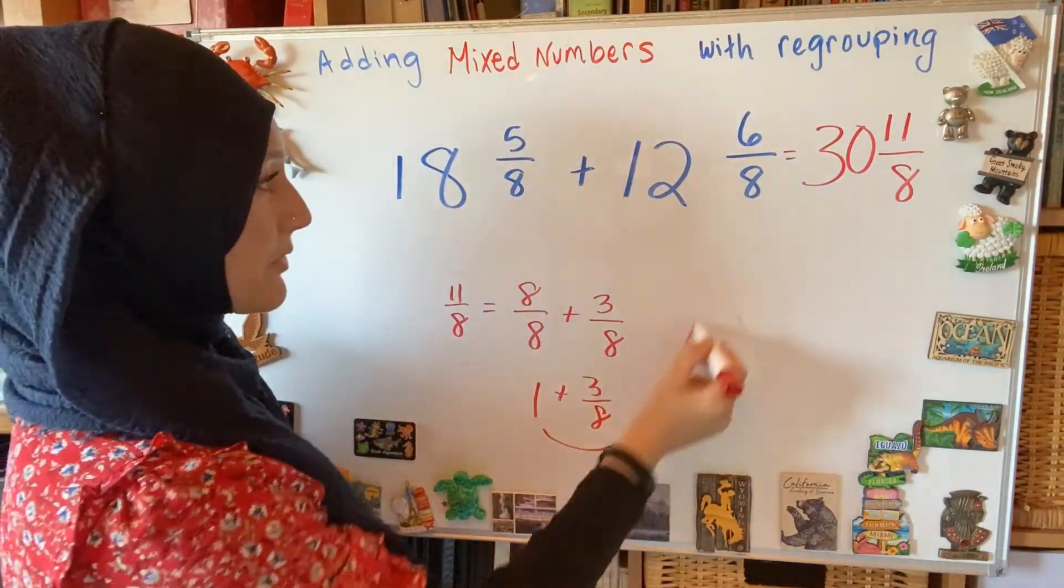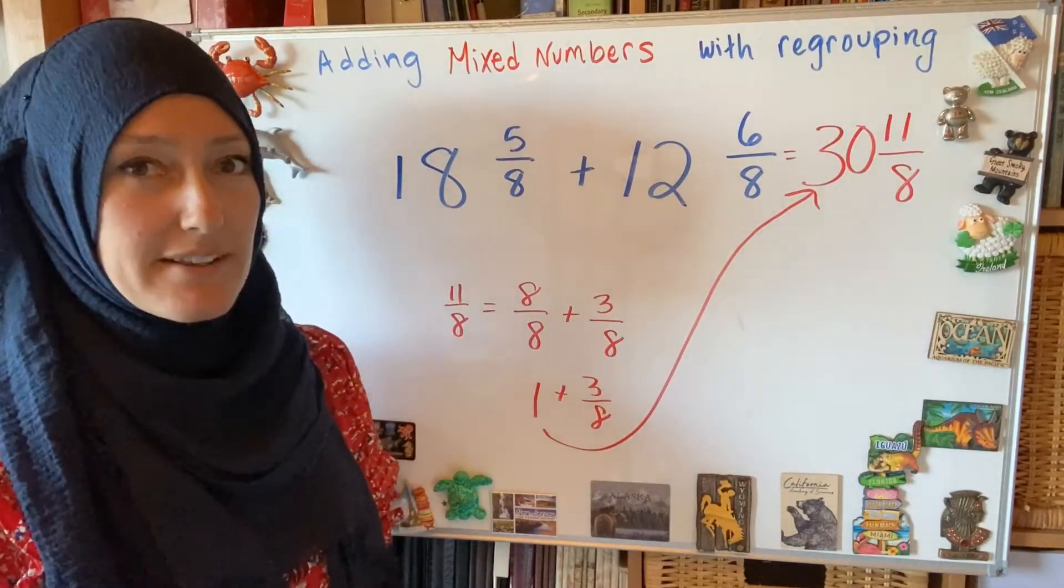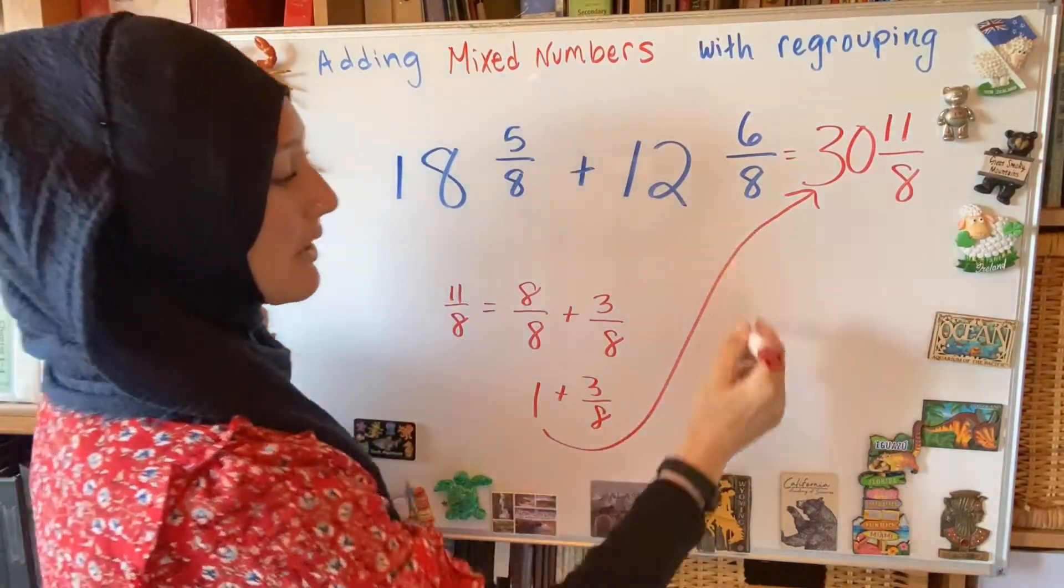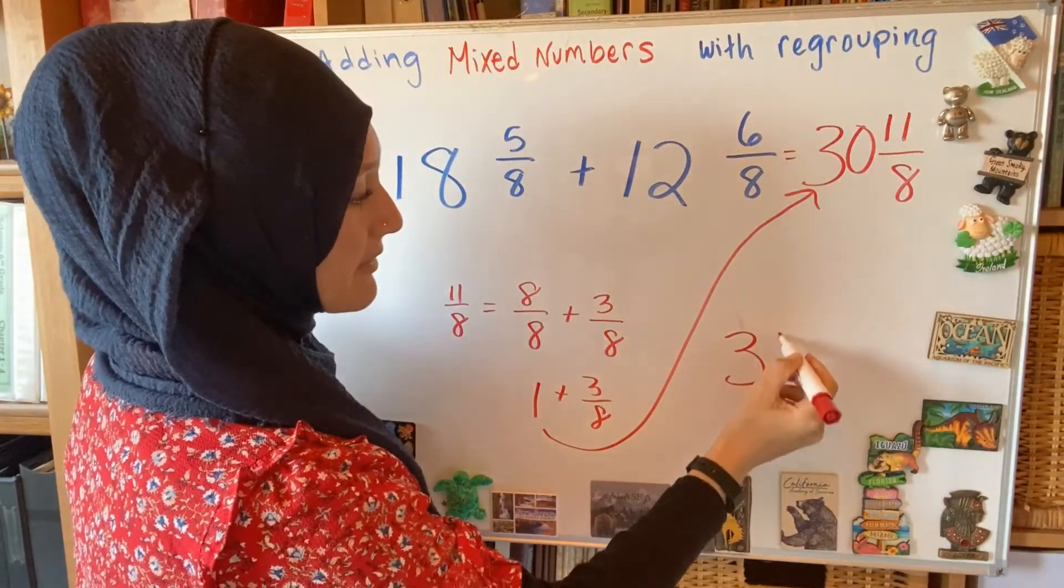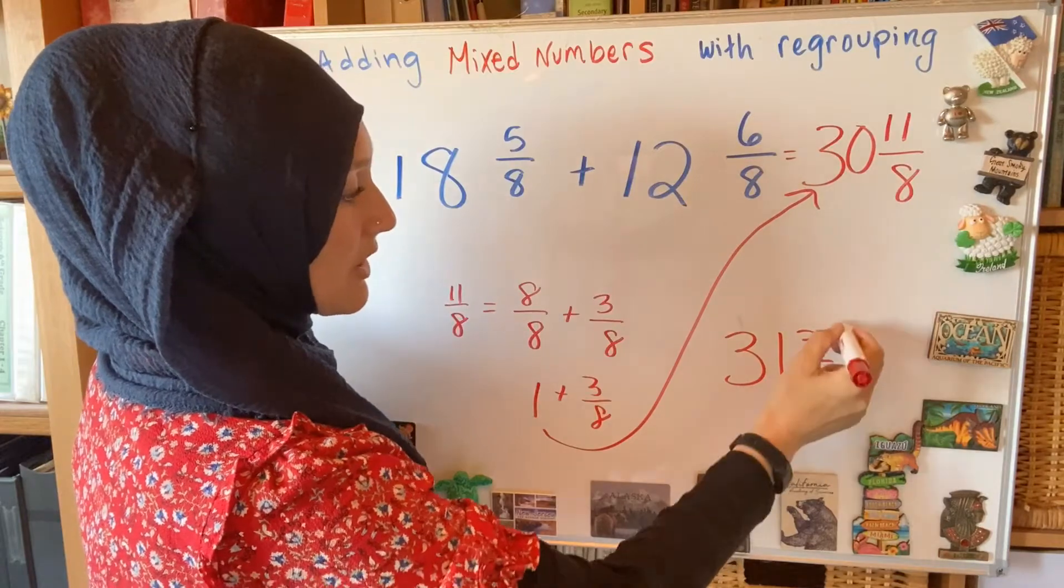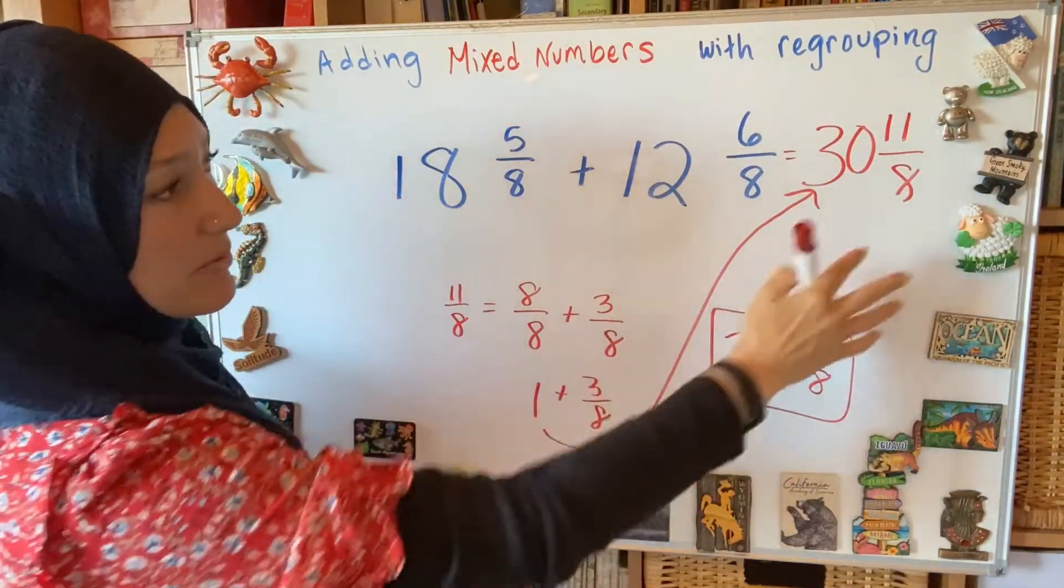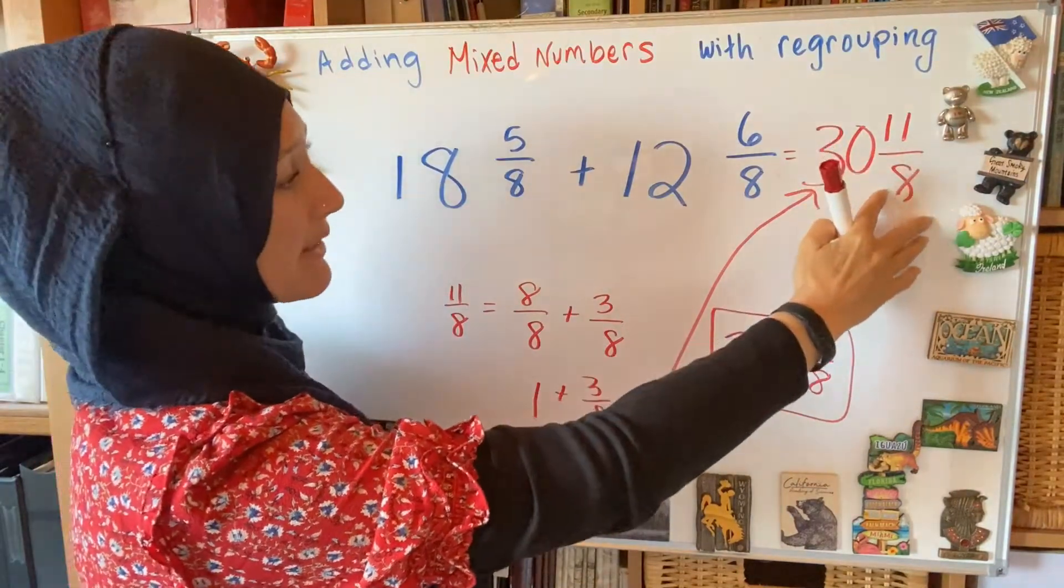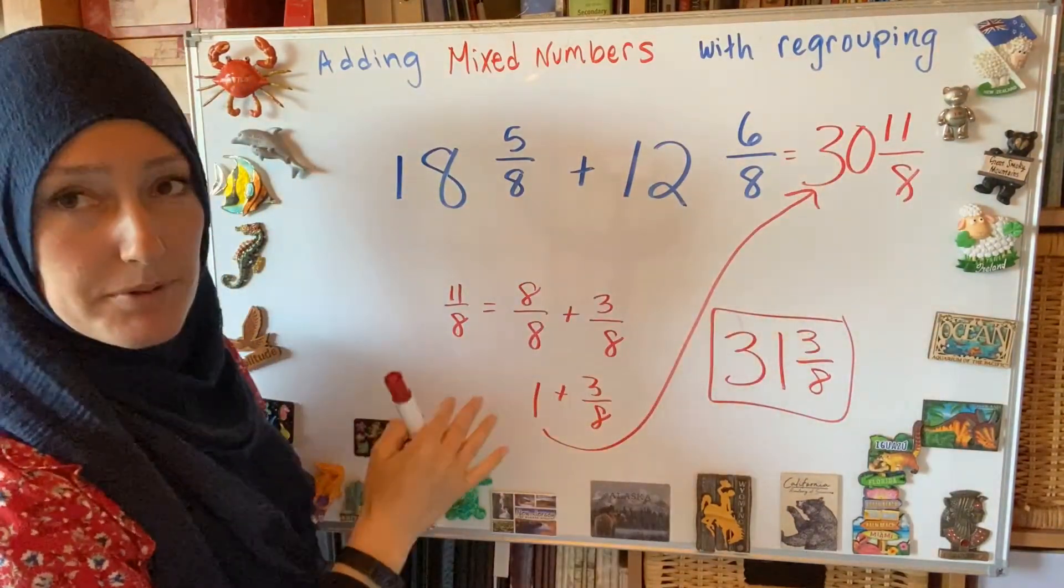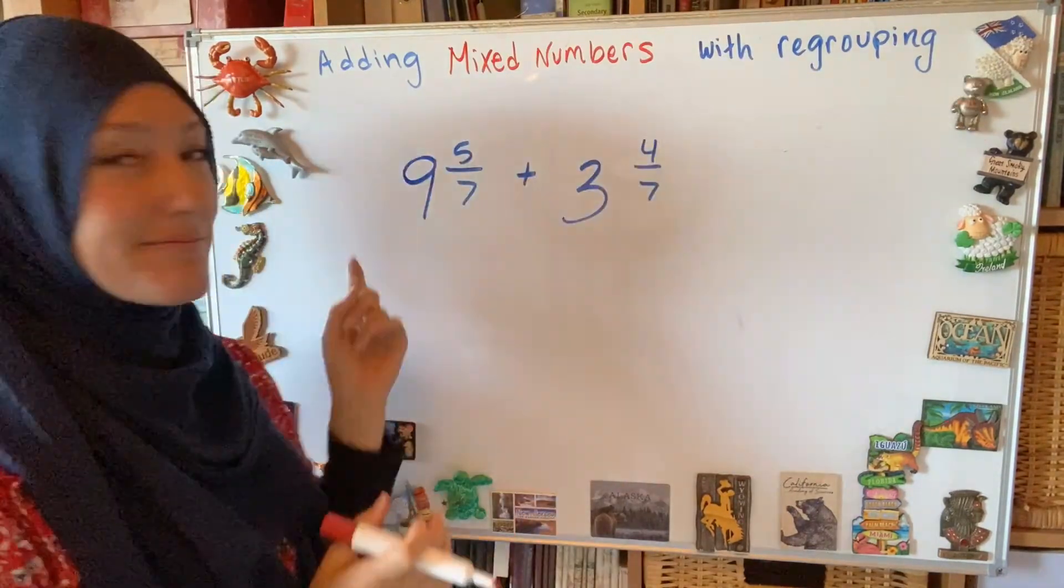I take my one whole and I give it to my whole amount over here and then finalize my answer. So this becomes 31 and 3 eighths. So once I am regrouping it over here, I don't look back at this because what I've done is I've taken my 11 eighths and I've rewritten it as one whole and the leftover amount.